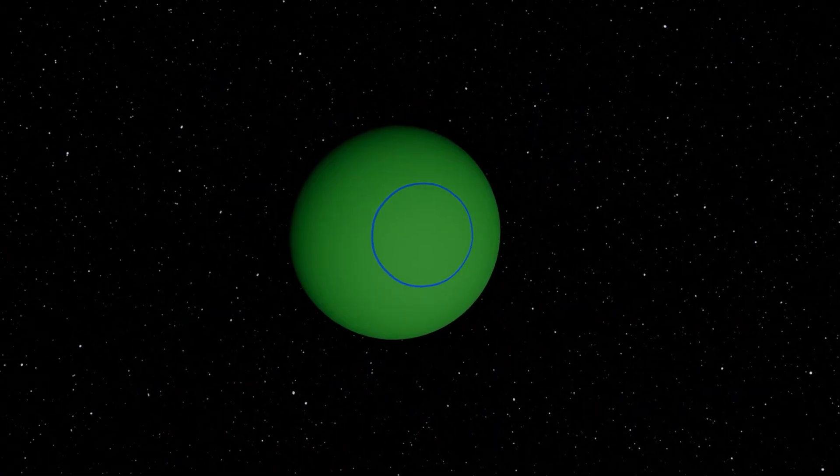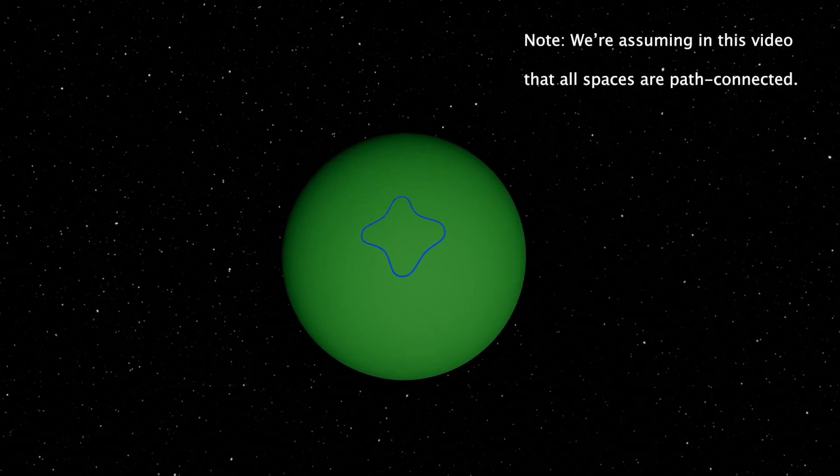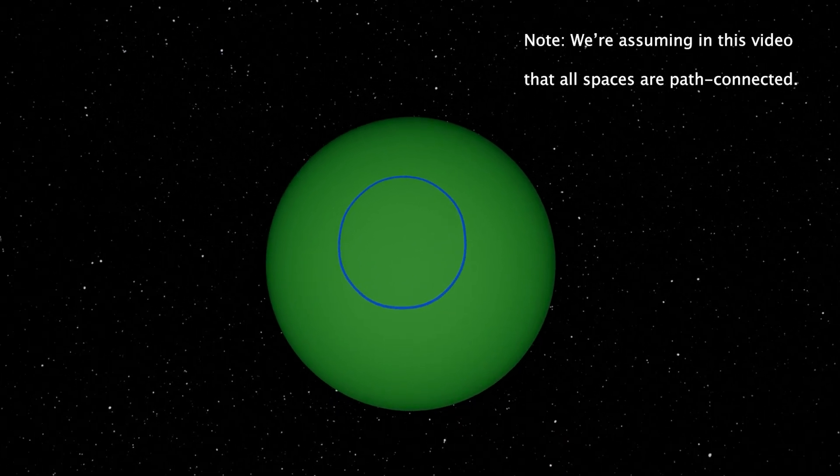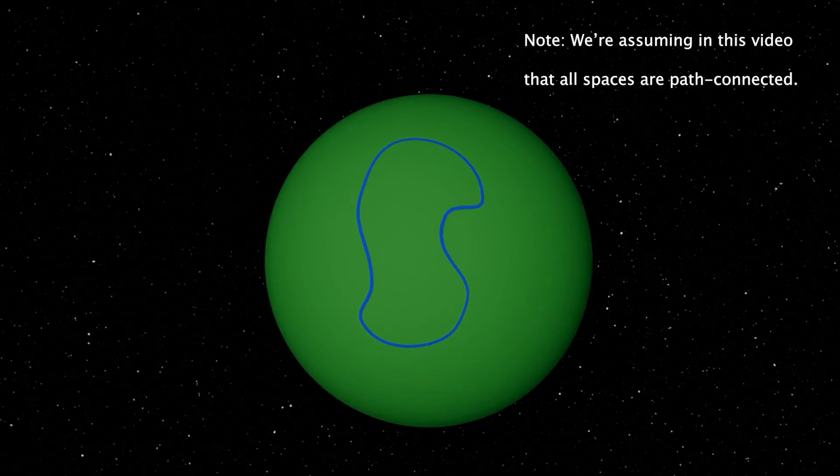In a world that has no holes, like a sphere, it is possible to deform any loop around the world into any other loop without cutting the loop. When there is a hole in your world, like a plane with a hole through the center, this is no longer possible.